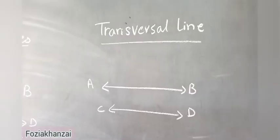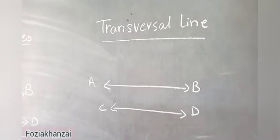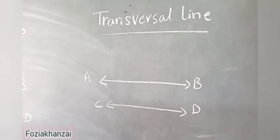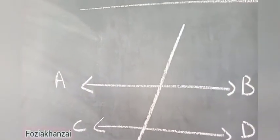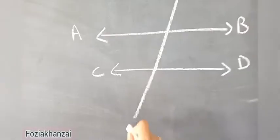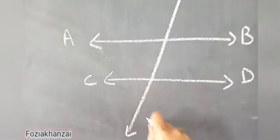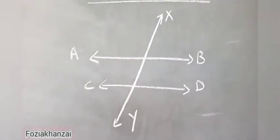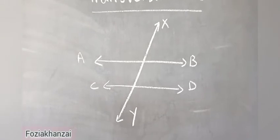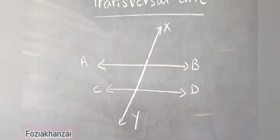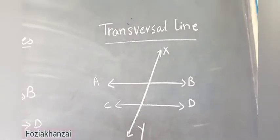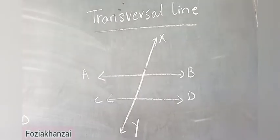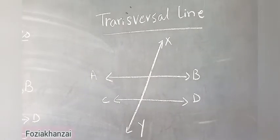Now the next definition: transversal line. AB and CD are both parallel lines. Now I draw a third line — it is called a transversal line. We can call it XY. This line XY is called the transversal line. AB and CD are parallel lines that cannot intersect each other, but the third line is called the transversal line — it cuts the parallel lines.